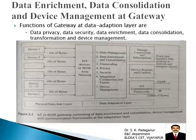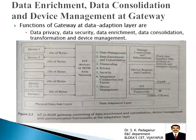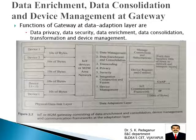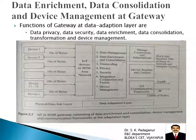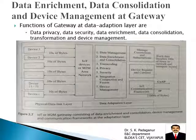The gateway is designed at the data adaptation layer. Here we design the gateway to interface the device with the internet, making it a very important device in IoT. The main two functions of the gateway at the data adaptation layer are data enrichment and data consolidation.